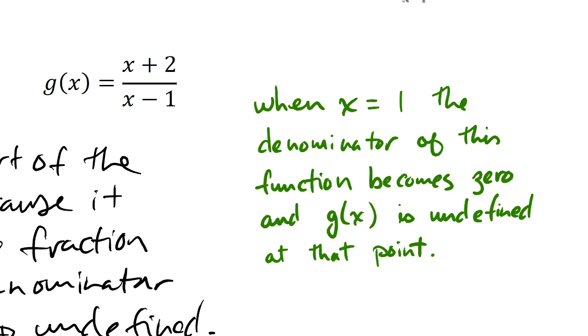Another of the restrictions that can pop up are square roots that have negative numbers in the radical. Like the square root of negative 3 is undefined under the real numbers.